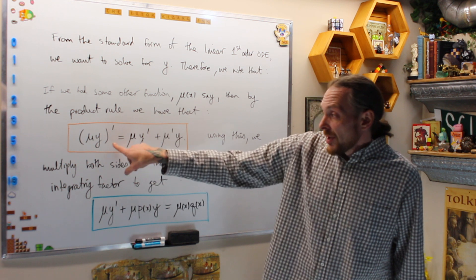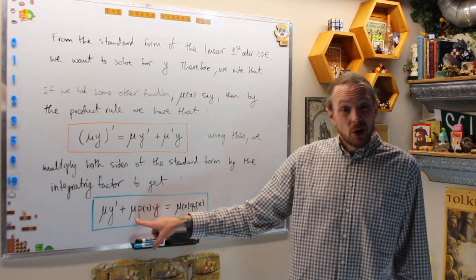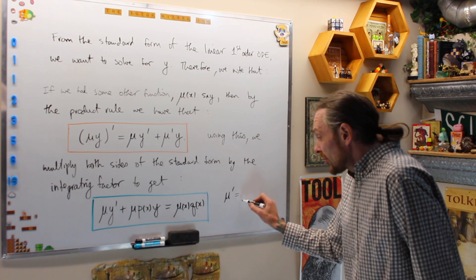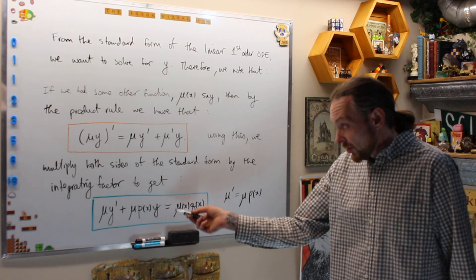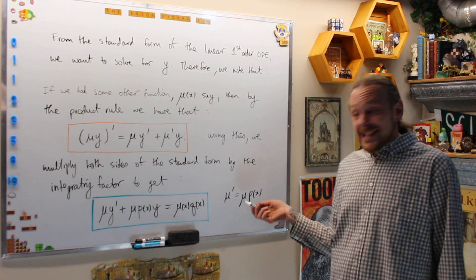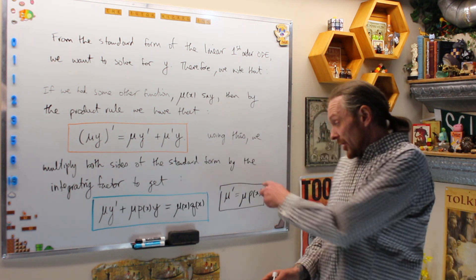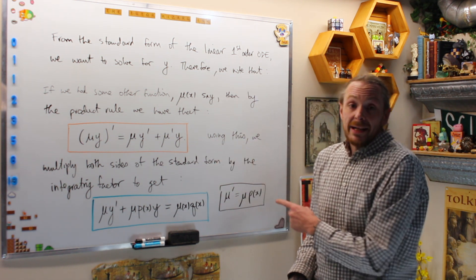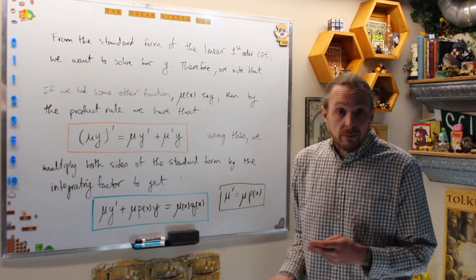We're trying to recognize this product rule. For that to work, we would need mu prime to equal mu times p of x — that's the condition for the product rule to apply. We're going to cleverly solve for mu in this. It turns out this is a separable ordinary differential equation. So we're going to separate it, solve for mu to get the integrating factor explicitly, and then give a technique for systematically solving linear first-order differential equations from the standard form.